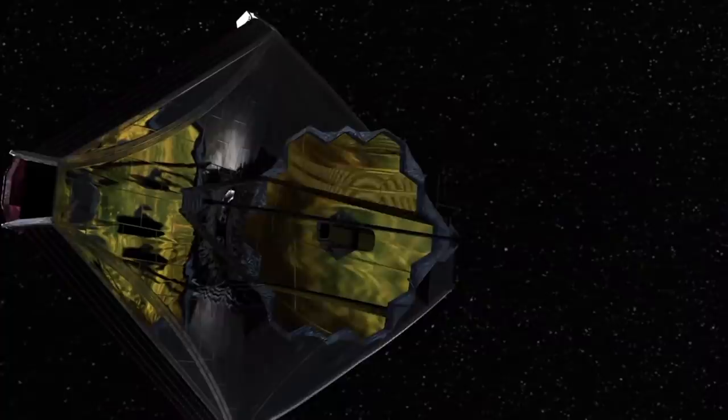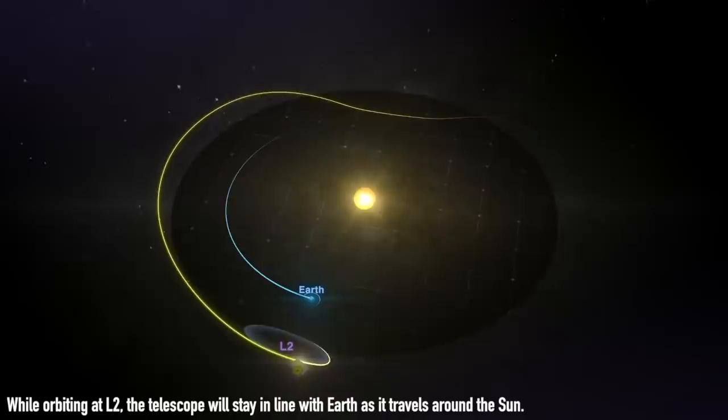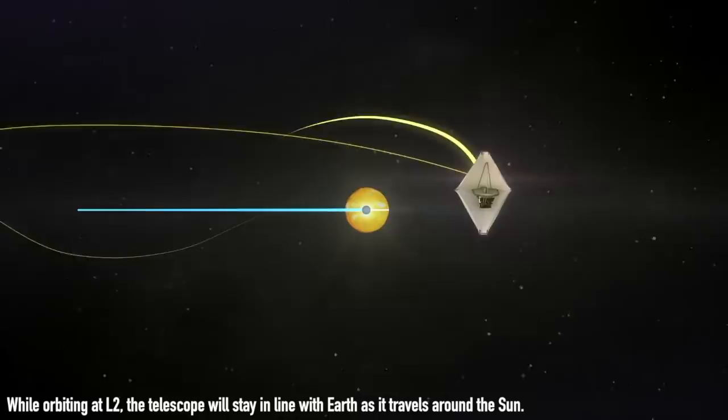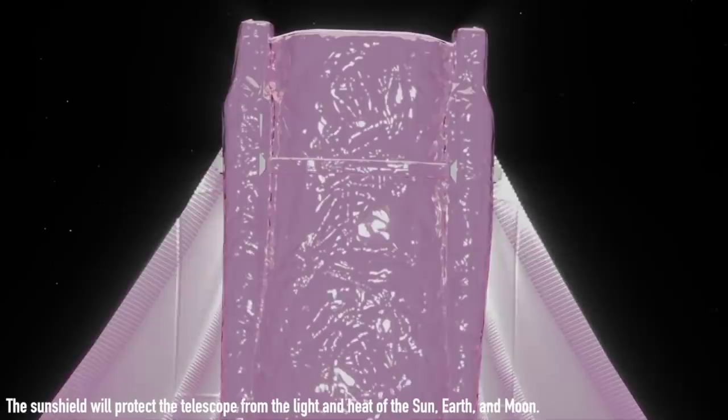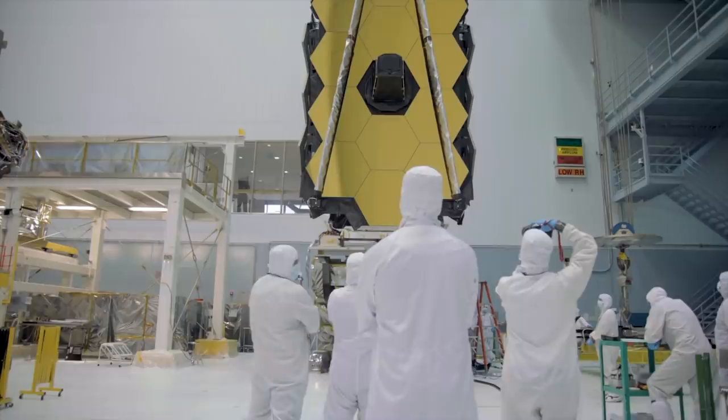The telescope then began its month long journey to L2. Here it's worth explaining just what Lagrange points are and why they are useful for spacecraft. These are special points in space located between gravitational objects that give an advantage if you want to keep a spacecraft in a certain position and conserve fuel, creating an advantage.